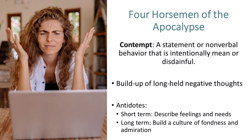A short-term antidote for contempt is to describe your feelings and needs. Similar to the criticism antidote, focus on what you need and try to avoid blaming or attacking the other person. A long-term antidote is to build a culture of fondness and admiration — try to focus on what this co-worker does well and appreciate gratitude for positive qualities and actions.